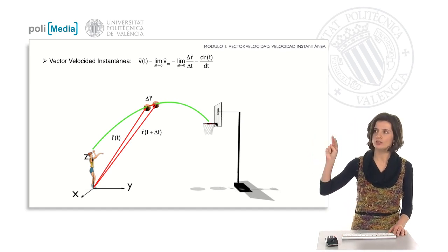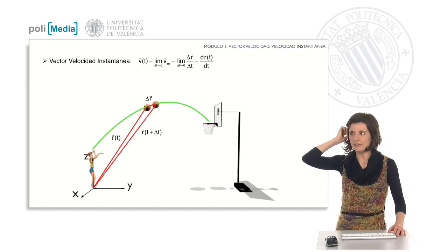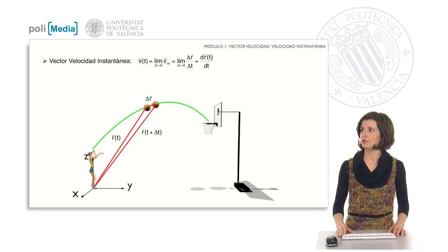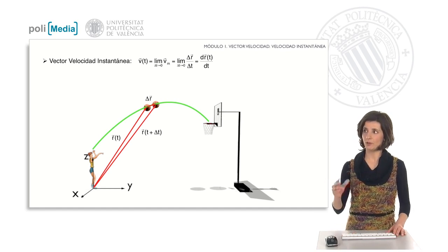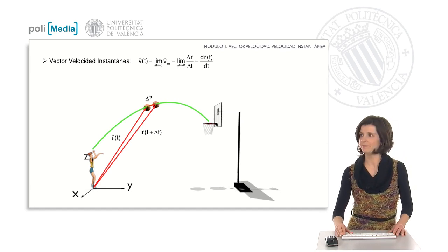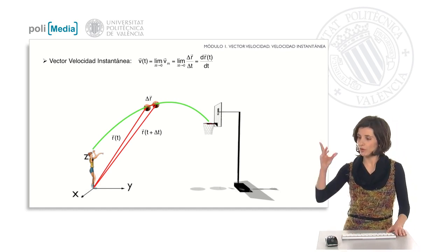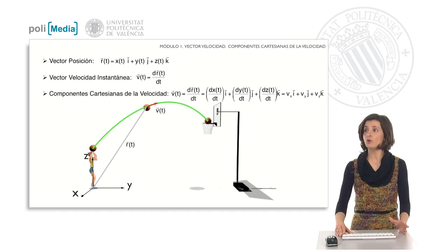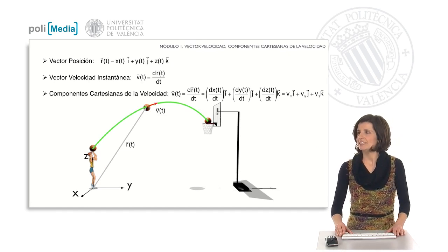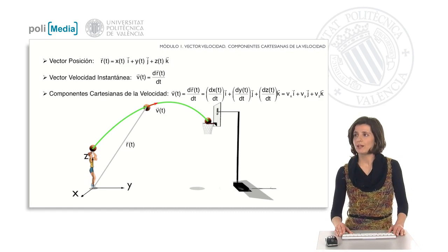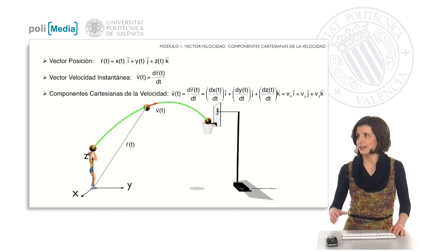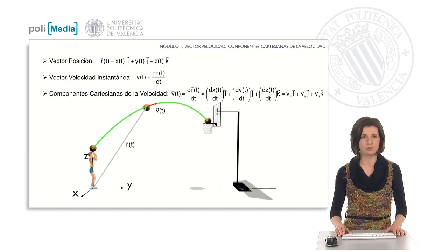In the figure we see the ball in two instants that we can suppose infinitely close, and we have represented the displacement vector. The instantaneous velocity vector is that displacement vector divided by the time increment Δt, and its direction and sense coincide with that displacement vector. Since the instantaneous velocity vector is the derivative of the position vector, to calculate its Cartesian components we must derive with respect to time each of the Cartesian components of the position vector.